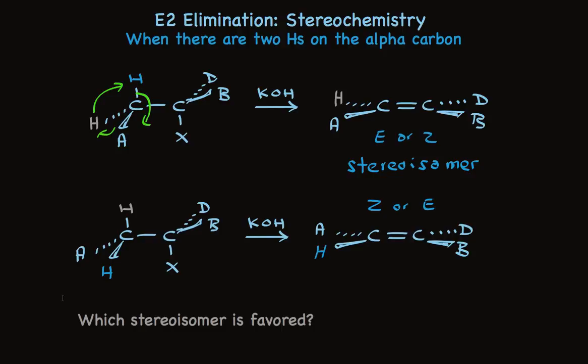The answer? The more stable one. The factors that make one alkene more stable than the other will also affect the stability of the transition states leading to these stereoisomers. So the more stable alkene will have a more stable transition state, lower activation energy, and will be formed faster.